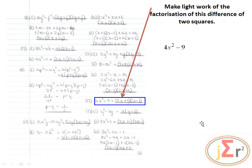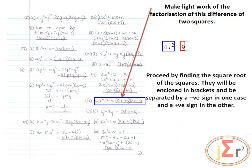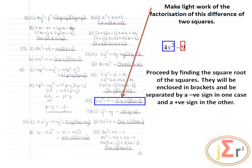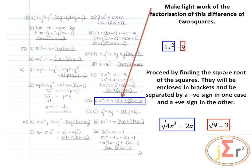Make light work of the factorization of this difference of two squares: 4x² - 9. By now, we know we need to find the square root of the squares. The square root of 4x² is 2x, and the square root of 9 is 3. Separating them by a negative and a positive sign gives (2x + 3)(2x - 3).